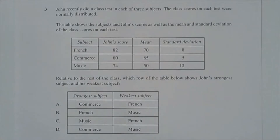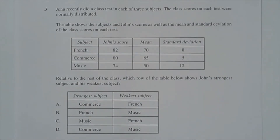Question 3. John recently did a class test in each of three subjects. The class scores on each test were normally distributed. The table shows the subjects, John's scores, and the mean and standard deviation of the class scores on each test. Relative to the rest of the class, which row of the table shows John's strongest subject and his weakest subject?